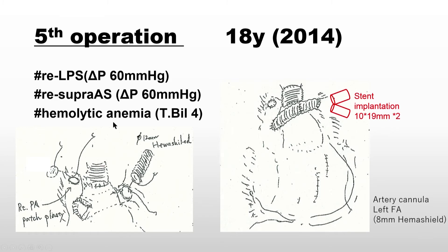By the fifth operation, left PA still had high pressure gradient and there was supraaortic stenosis — probably some graft site in the narrow segment. The patient also had hemolytic anemia, with a total bilirubin of four. So at that time, a fifth operation was performed: artificial graft interposed from the left pulmonary artery to the main pulmonary artery, plus open stent implantation in both the upper and lower areas of the pulmonary branches.